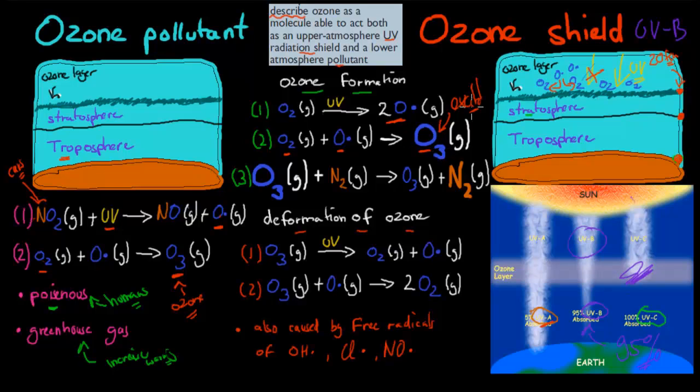The last step is the really excited ozone bumps into a nitrogen molecule. Remember, 80% of the atmosphere is nitrogen. When they bump into each other, the excitement is transferred from the ozone to the nitrogen. So now the nitrogen is excited and the ozone is fine. We have stable ozone. Not only do we have stable ozone, but we also managed to get rid of some of the UV radiation through that formation.